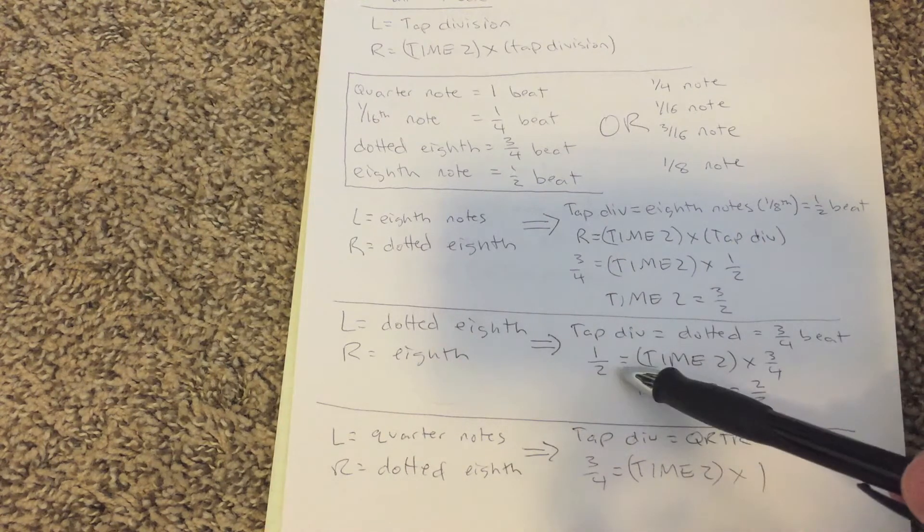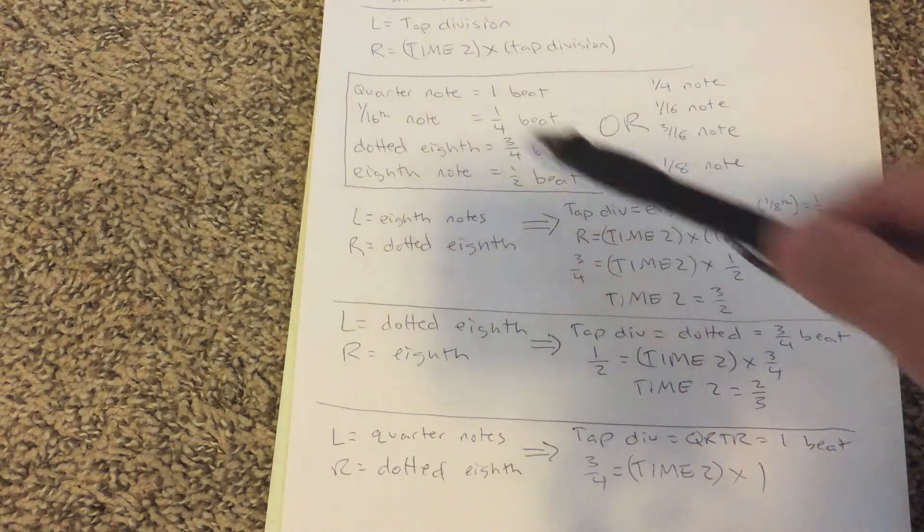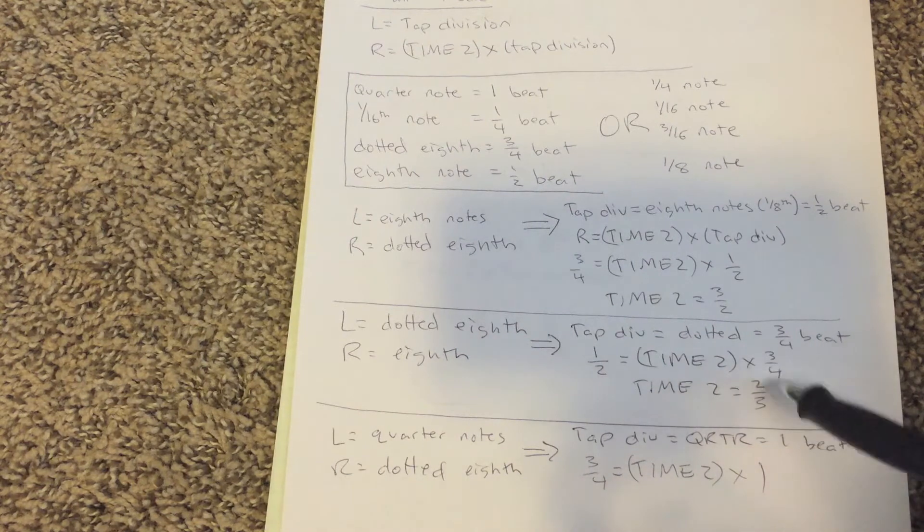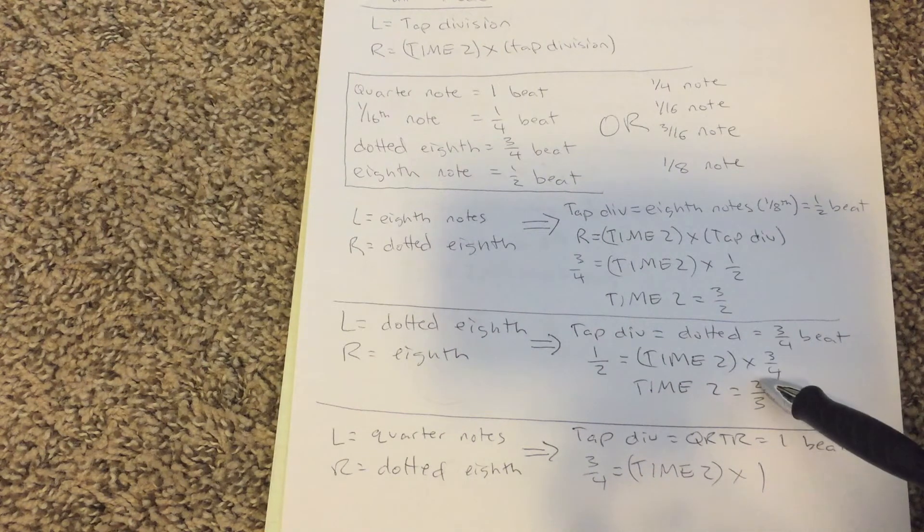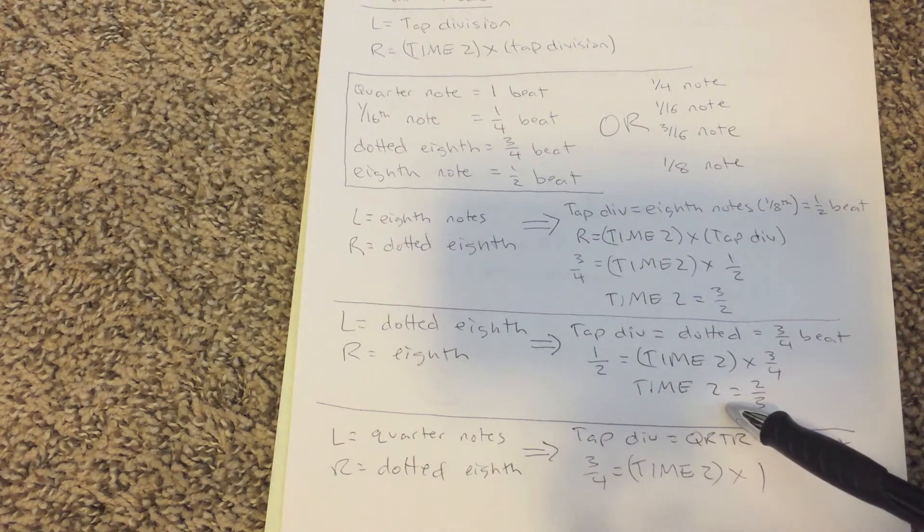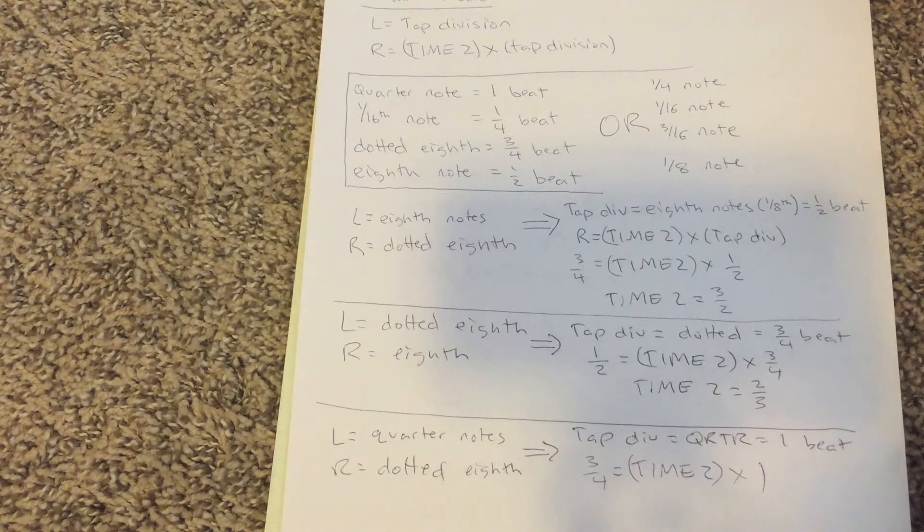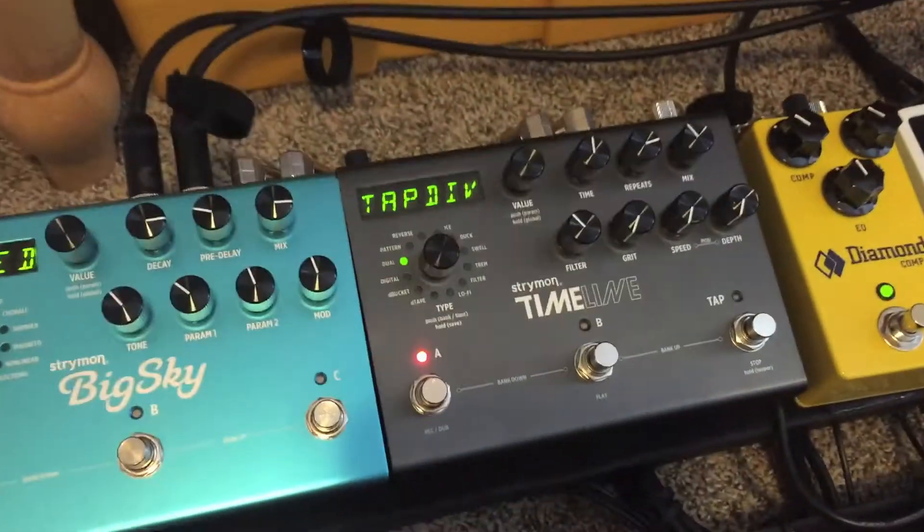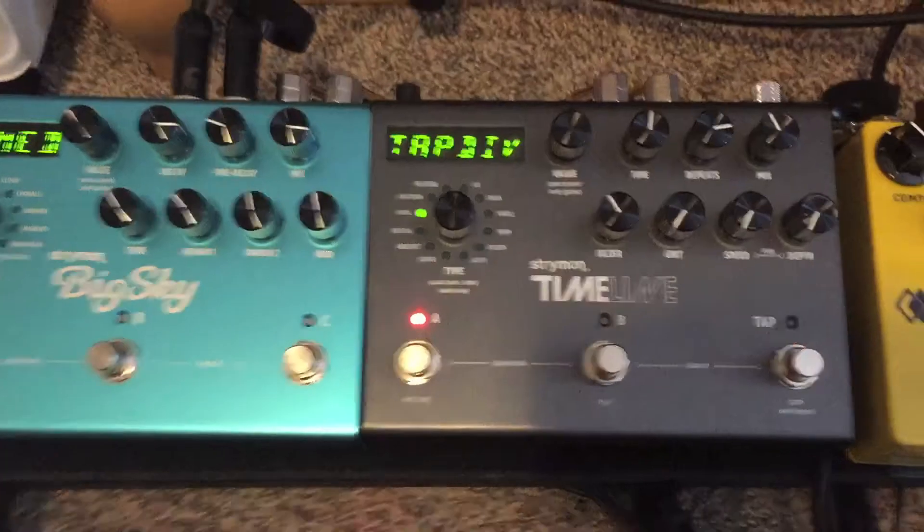I want eighth notes, which are half a beat, which is R. Solving for time two. And I know that my tap division is three quarters. Time two, you do the math, it's two thirds. And we can do that right now.